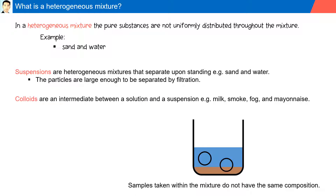Colloids are intermediate between a solution and a suspension. Examples include milk, smoke, fog, and mayonnaise. They do not separate upon standing.